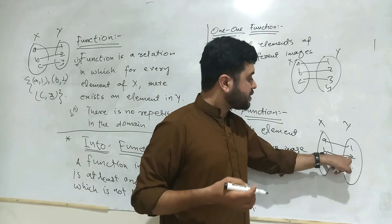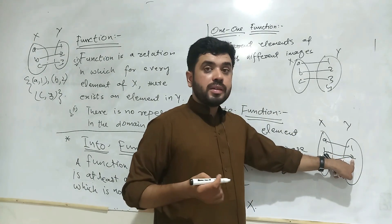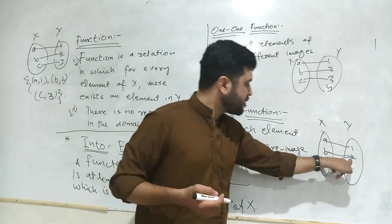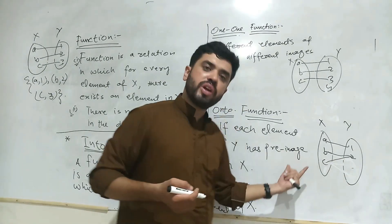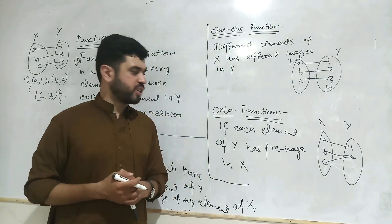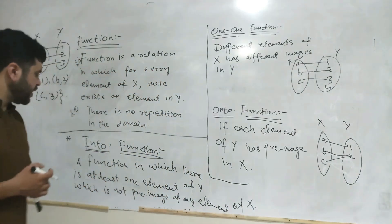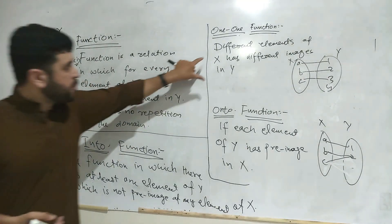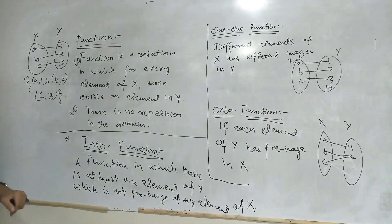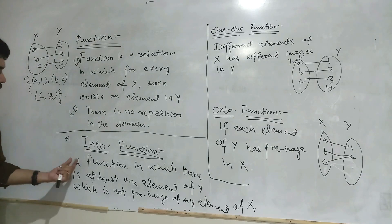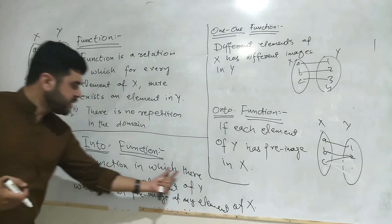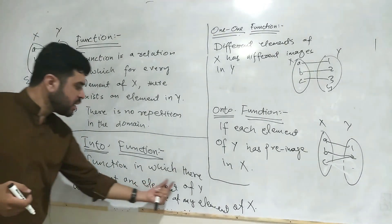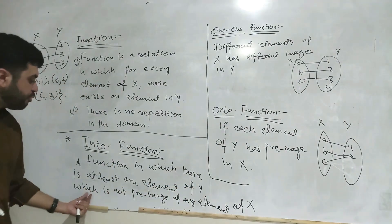My main concern is that every image must have a pre-image, so in this case it is also an onto function. The third type is the into function. An into function is actually the combination of one-to-one and onto — specifically, it is a function in which there is at least one element of Y which is not the image of any element of X.